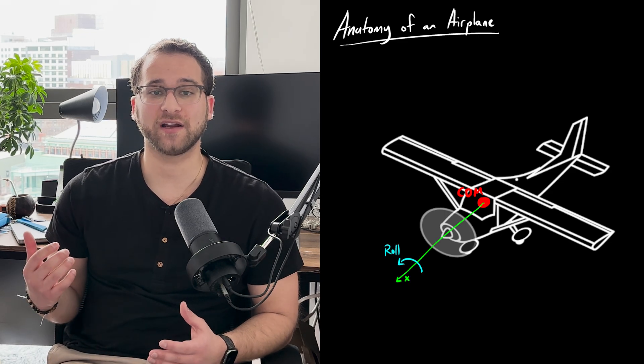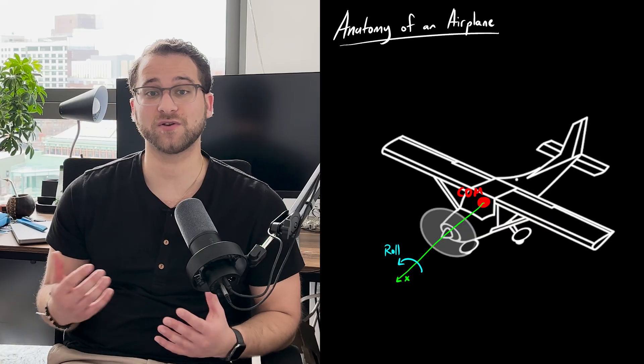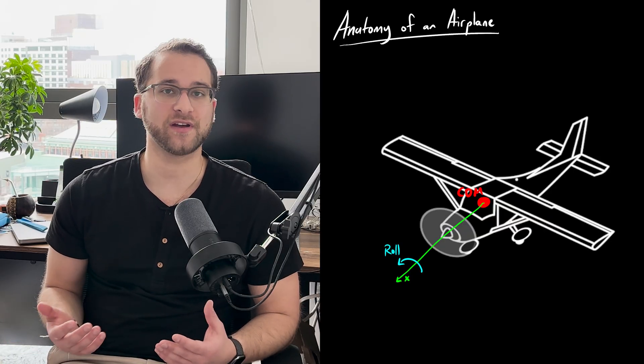It can move in the x, y, z, and it can rotate about the x, y, z. The x axis extends from the tail of the plane to the front, and this is the longitudinal axis. Rotation around this is roll.